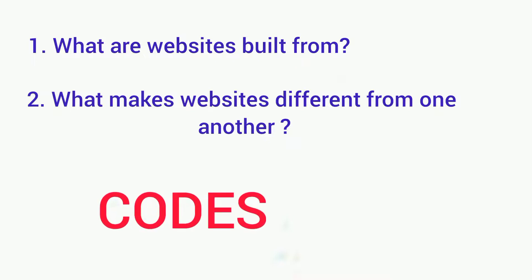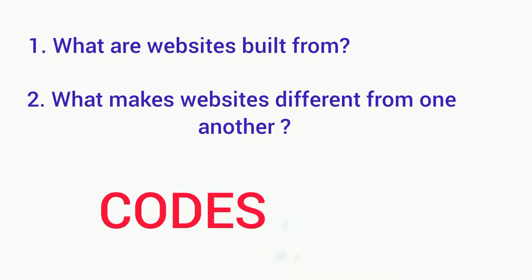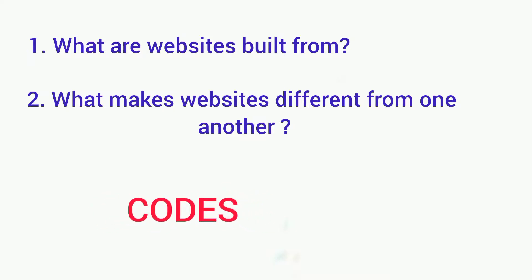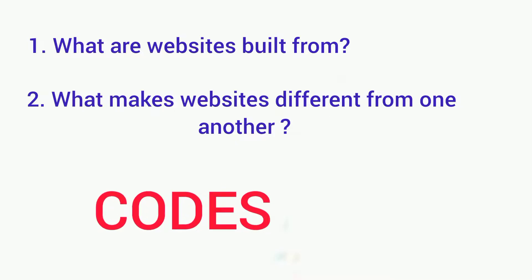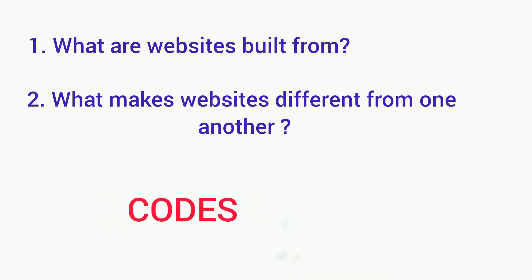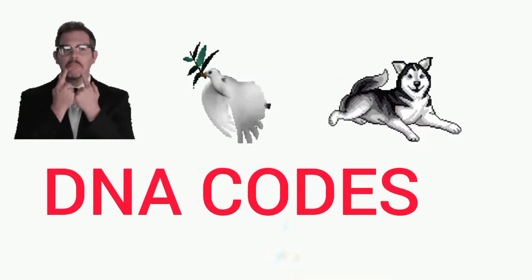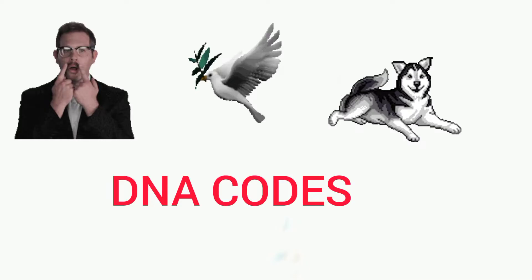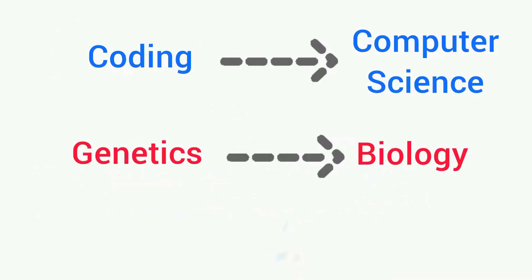The answer is codes — as simple as that. It's codes that build websites. Computer scientists can use codes to build websites. If you understand that websites run on codes, you will also understand that every living species on earth runs on codes too, but not just any codes — DNA codes. We could say that coding is to computer science as genetics is to biology.